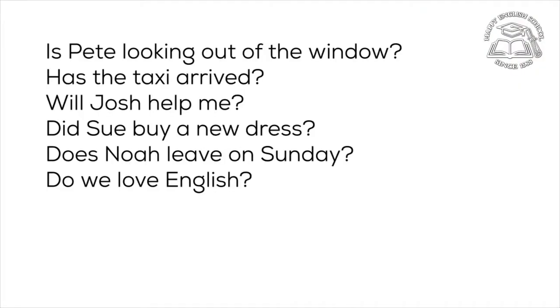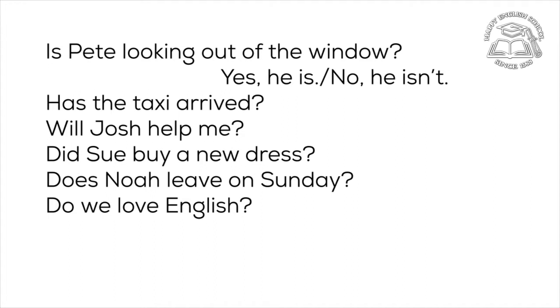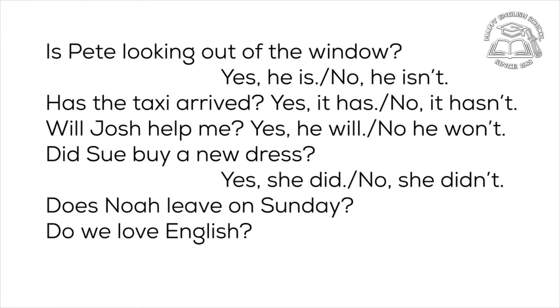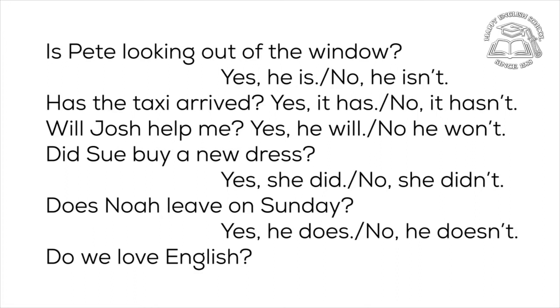To answer yes-no questions we need short answers: yes or no, then the pronoun, and then the auxiliary verb — with 'not' in negative answers. 'Is Pete looking out of the window?' — Yes, he is. / No, he isn't. 'Has the taxi arrived?' — Yes, it has. / No, it hasn't. 'Will Josh help me?' — Yes, he will. / No, he won't. 'Did Sue buy a new dress?' — Yes, she did. / No, she didn't. 'Does Noah live on Sunday?' — Yes, he does. / No, he doesn't. 'Do we love English?' — Yes, we do.